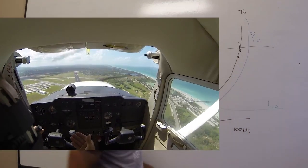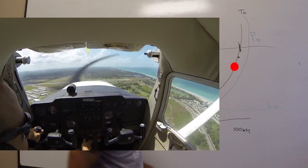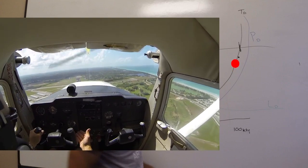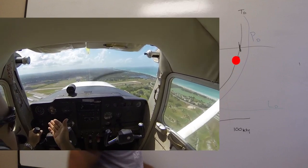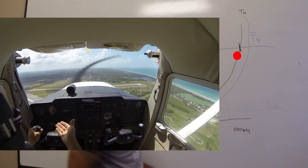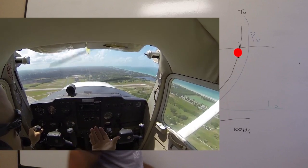Here's a good example of the top side of the power curve. Basically, full power is set, we're at level flight, and the airplane can't go any faster. We can't climb at this airspeed because that's all the power we have.